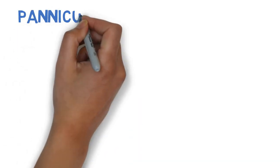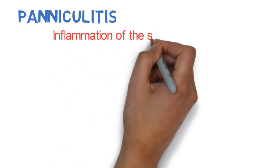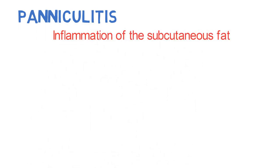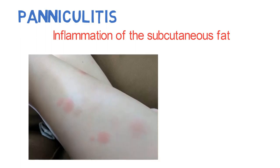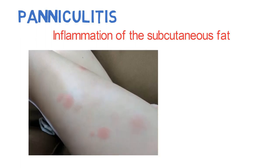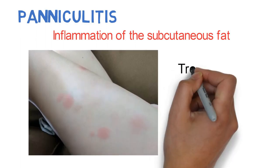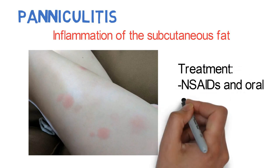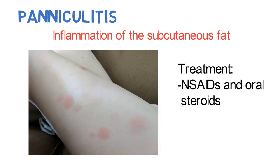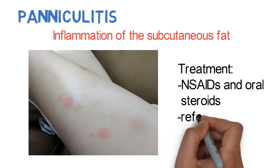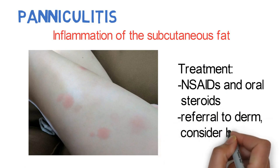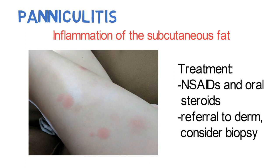Panniculitis involves inflammation of the subcutaneous fat, resulting in painful nodules under the skin. It affects the upper and lower extremities and may be associated with arthralgias. For treatment, NSAIDs can provide analgesia and a short course of oral steroids may be considered. Refer to dermatology for advice on treatment, diagnosis, and consideration of a biopsy.